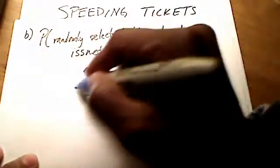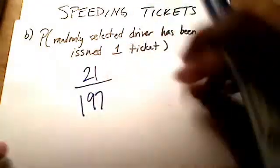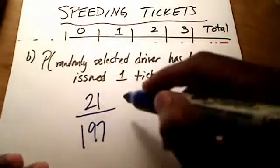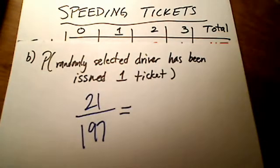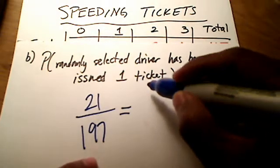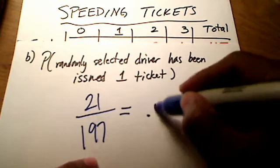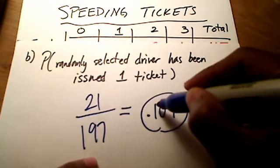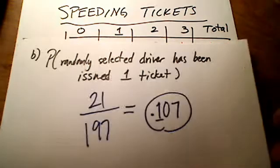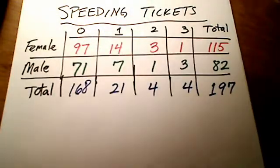So it's going to be 21 out of 197, our same total. We have a different percentage this time. 21 divided by 197 gives us 0.107 if you round to three decimal places. I hope you can verify that on your calculator. That's randomly selecting a driver who has had only one ticket.